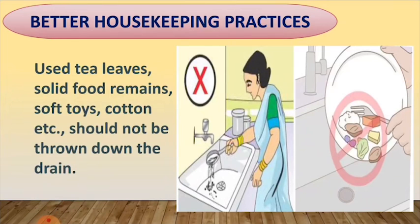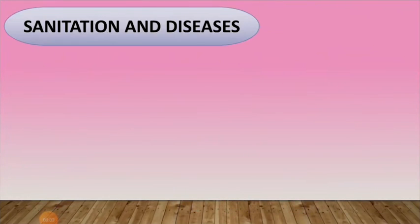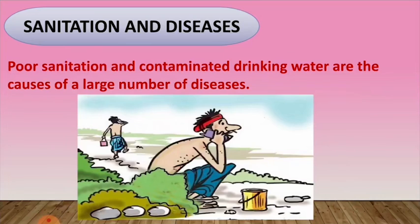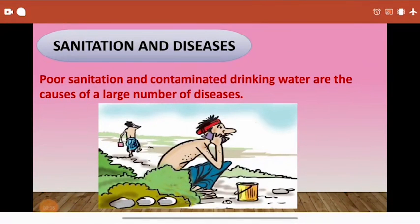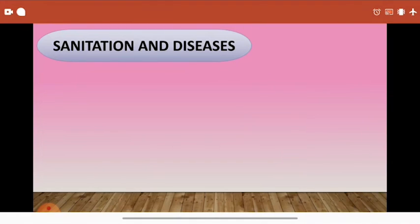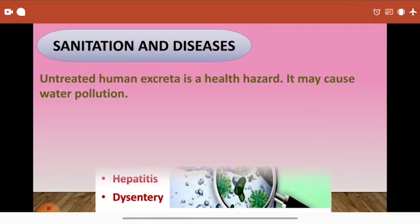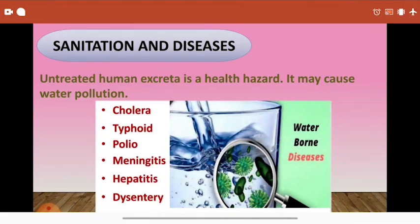Sanitation and diseases: poor sanitation and contaminated drinking water are the causes of a large number of diseases. Many places do not have sewage facilities for the safe disposal of human excreta, due to which a large number of people defecate in open fields, near railway tracks, on dry river beds, and sometimes directly in water. Untreated human excreta is a health hazard and may cause water pollution — both surface water and groundwater get polluted. Drinking water contaminated with human excreta causes waterborne diseases like cholera, typhoid, polio, meningitis, hepatitis, and dysentery.